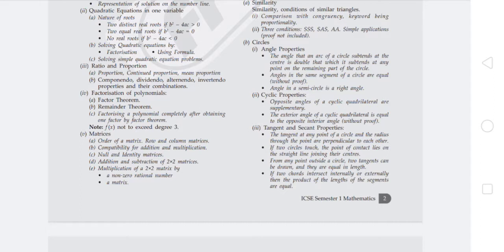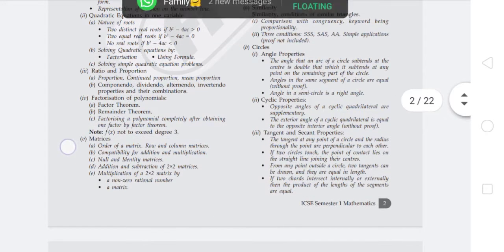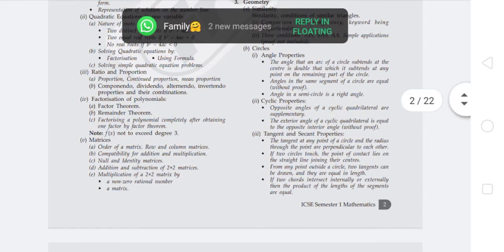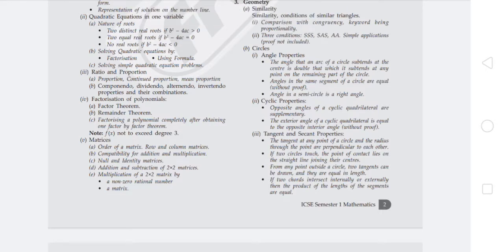Next chapter is Quadratic Equation in one variable, focusing on nature of roots. Two distinct real roots if b² - 4ac > 0, two equal roots if b² - 4ac = 0, and no real roots if b² - 4ac < 0. Then solving quadratic equations by factorization method and using formula. Also solving simple quadratic equation problems.